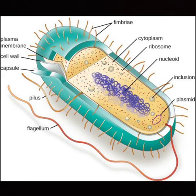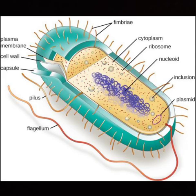In Prokaryotic cells, chromosomes are composed of only nucleic acids. On the other hand, chromosomes are composed of nucleic acid and protein in Eukaryotic cells.